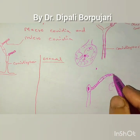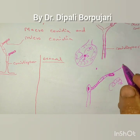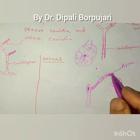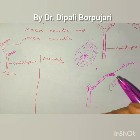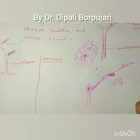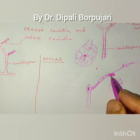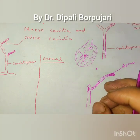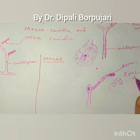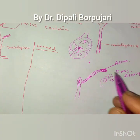The apical cell of the ascogenous hyphae acts as an ascus. The diploid nucleus first undergoes a fusion, then meiotic division, which is the reduction division. Ultimately, eight nuclei are formed. Each nucleus takes some amount of cytoplasm and forms eight ascospores.